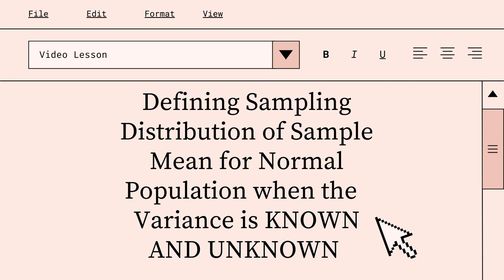Good day everyone! Welcome to my video lesson on the subject of statistics and probability. For today's lesson, we have to define sampling distribution of a sample mean for a normal population when the variance is known and unknown.